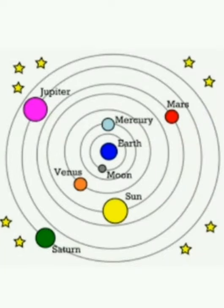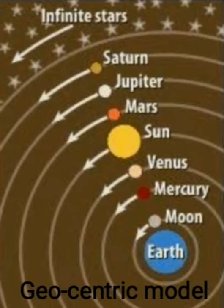Observe the picture, students. In the solar system, we saw the sun is at the center and planets are orbiting the sun. But in this picture, Earth is at the center. The sun, moon and planets are orbiting the Earth. This type of model is called the geocentric model.